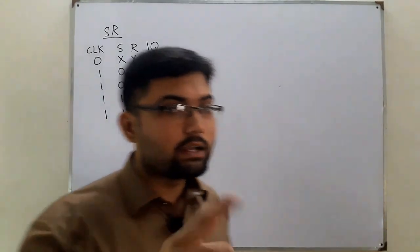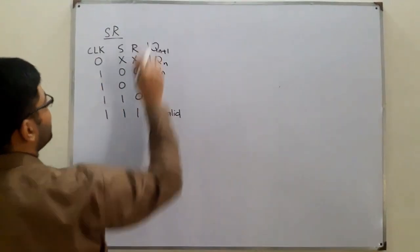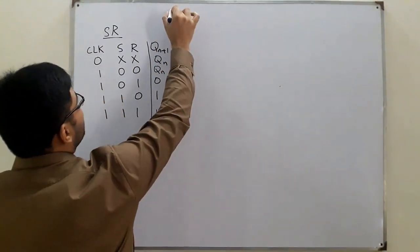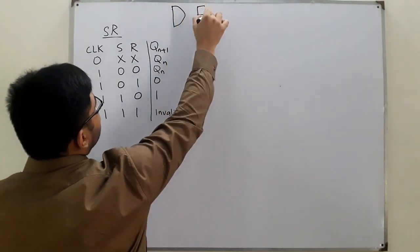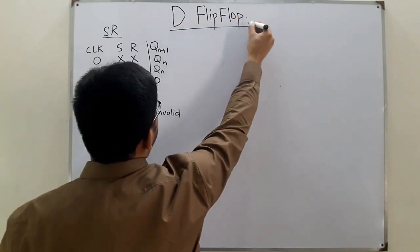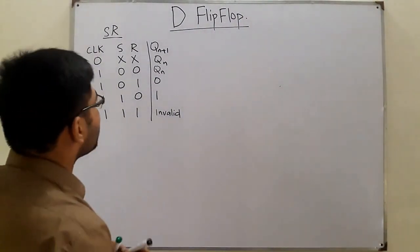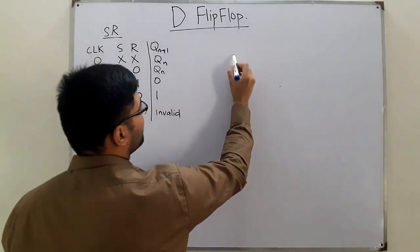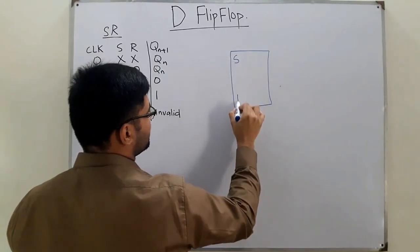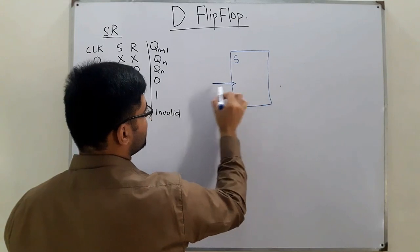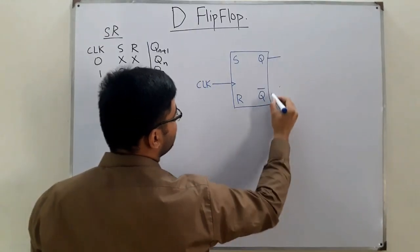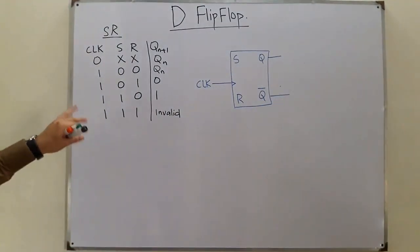Assalamu alaikum. Today's topic is the D flip-flop. Now let me draw the block diagram for the SR flip-flop so that it would be better to understand. This is your S, this is your R, the clock pulse is given, and you have the outputs Q and Q complement.